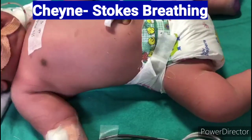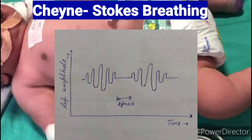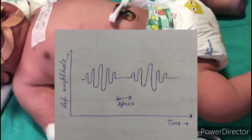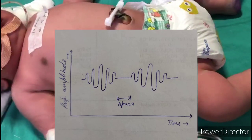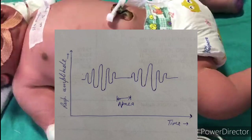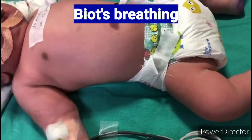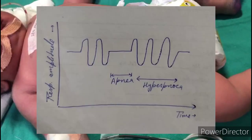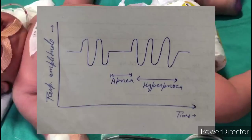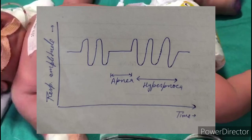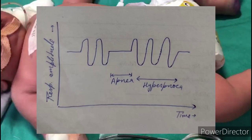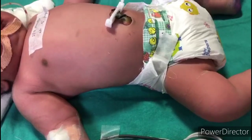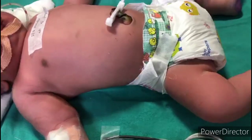Other abnormal rhythms include Cheyne-Stokes breathing, Biot's breathing, and paradoxical breathing. In Cheyne-Stokes breathing, the patient has gradual hyperpnea followed by hypopnea, then an apneic pause, then gradual hyperpnea again. In Biot's breathing, the patient has hyperpnea, then an apneic pause, then hyperpnea again.